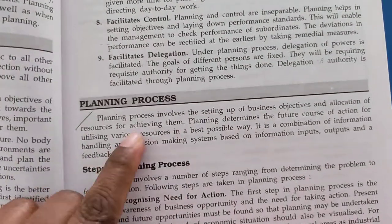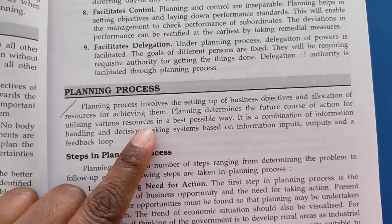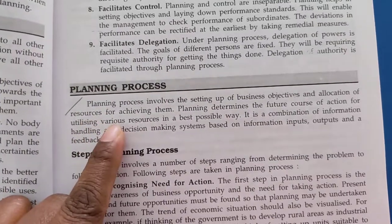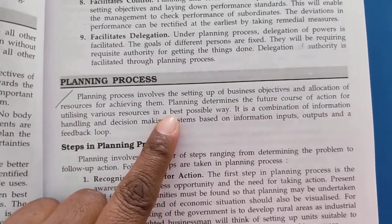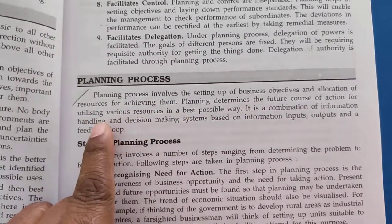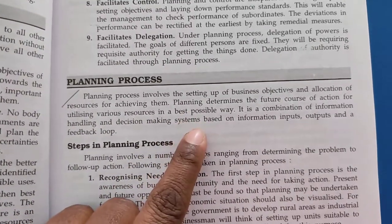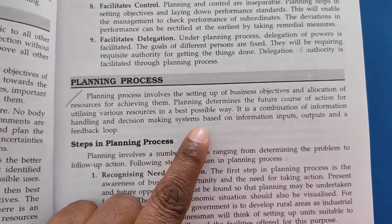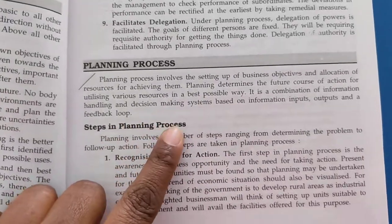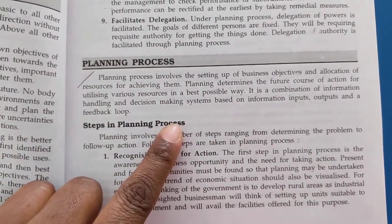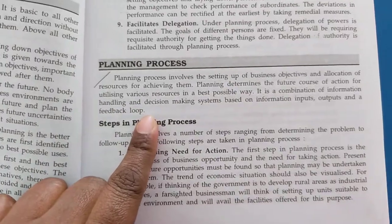The planning process involves the setting up of business objectives and allocation of resources for achieving them. Planning determines the future course of action for utilizing various resources in the best possible way. It is a combination of information handling and decision making systems based on information inputs, outputs and feedback loop.